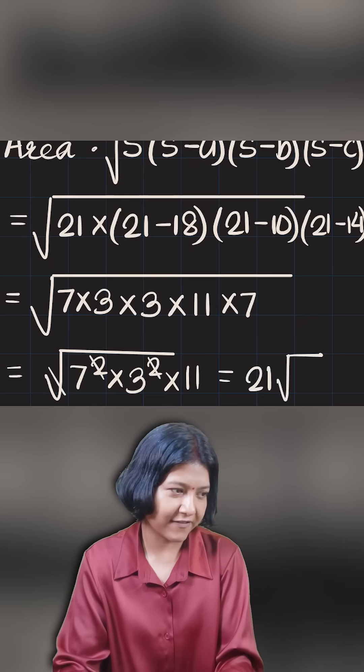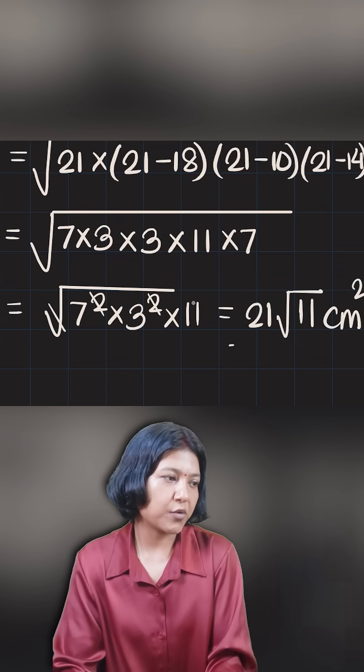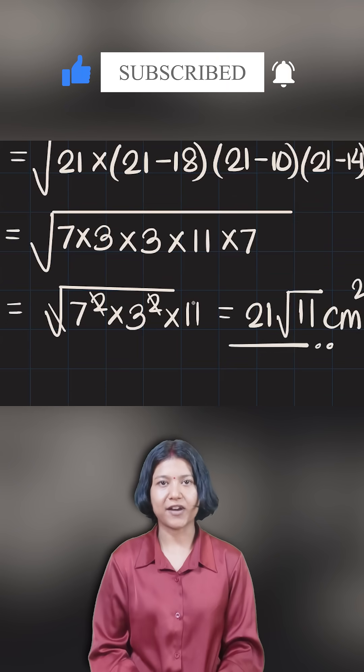Whereas 11 is still inside the root, giving me 21 root 11 centimeters square. If you are doing without a calculator, just leave the answer here and that's it. That is how you find the area.